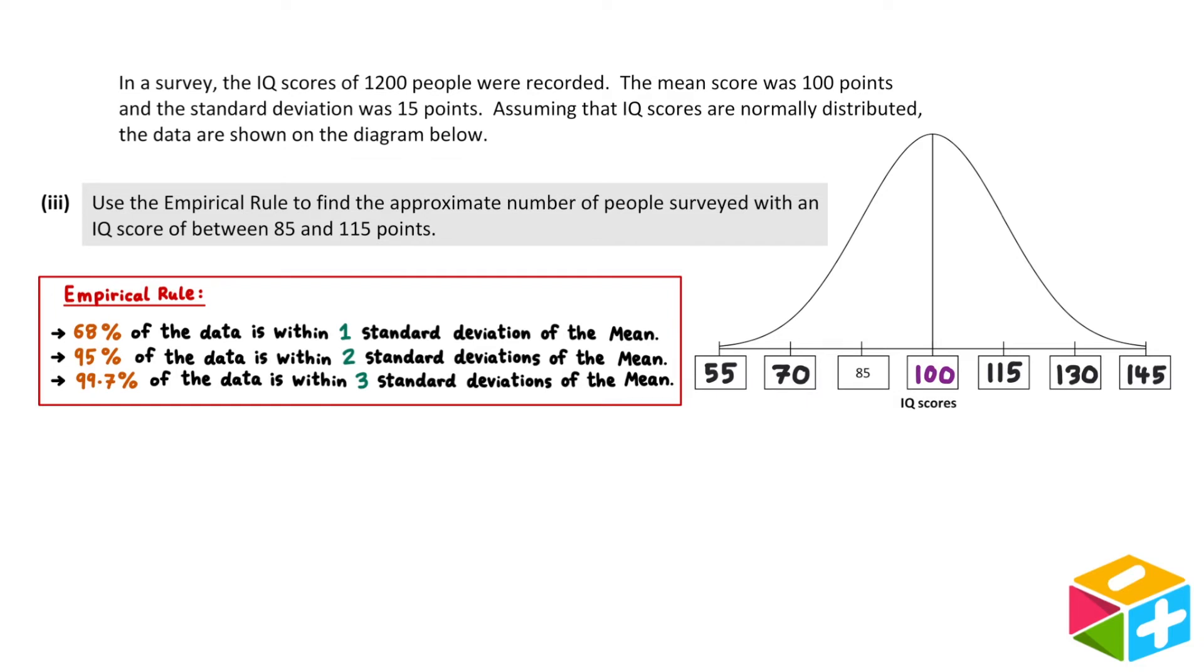Part III. Use the empirical rule to find the approximate number of people surveyed with an IQ score between 85 and 115 points. An IQ score between 85 and 115 corresponds to the shaded region in our diagram. Our mean is 100 and our standard deviation is 15. 85 is one standard deviation to the left of the mean. And 115 is one standard deviation to the right of the mean. So the region of interest corresponds to the data which is within one standard deviation of the mean.